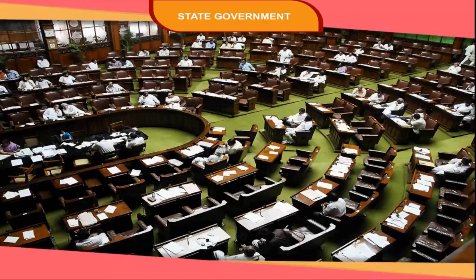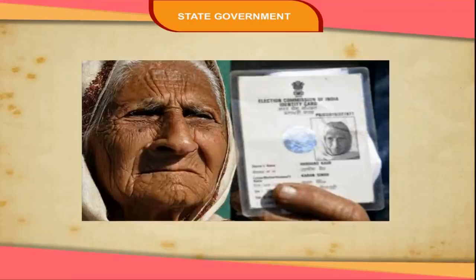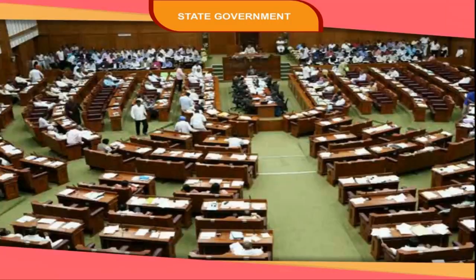The qualifications of the members and their tenure are similar to the members of Lok Sabha. Elections are based on universal adult franchise, meaning that all persons above 18 years of age have the right to vote. The system of secret ballot is followed. The Legislative Assembly is elected for a period of five years.